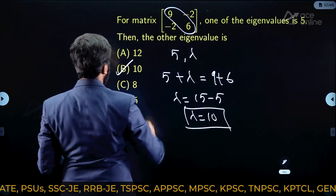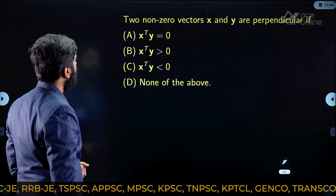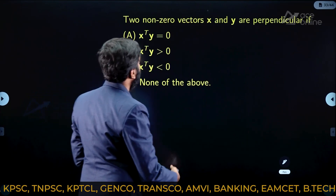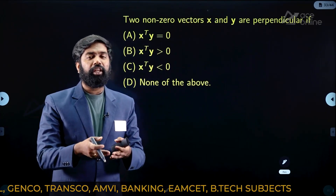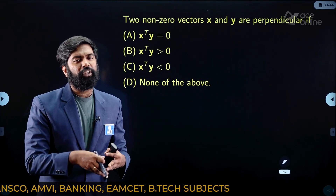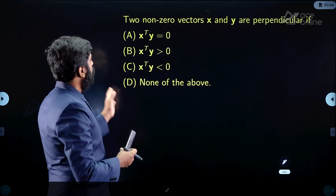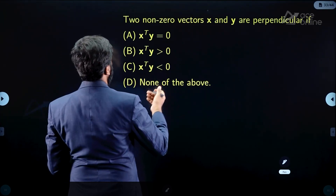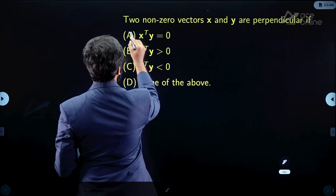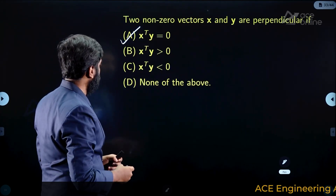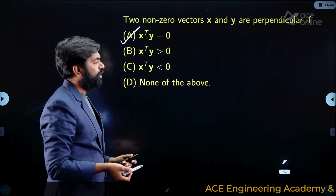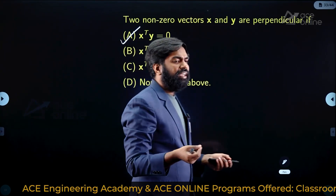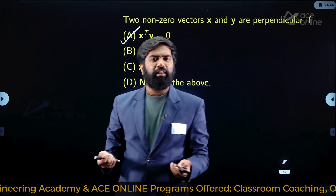Two nonzero vectors x and y are said to be perpendicular if their dot product (scalar product) is zero. This is the definition - dot product equal to zero. If you are already aware of vectors from your 11th or 12th standard, this takes a fraction of a second.